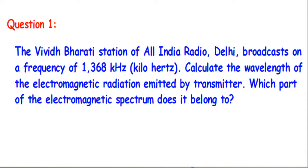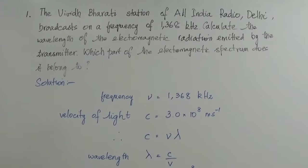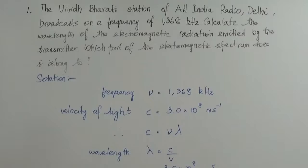Calculate the wavelength of the electromagnetic radiation emitted by the transmitter. So you have to calculate what? The wavelength of the wave, electromagnetic radiation. Which part of the electromagnetic spectrum does it belong to? You also have to find out what kind of wave it is.